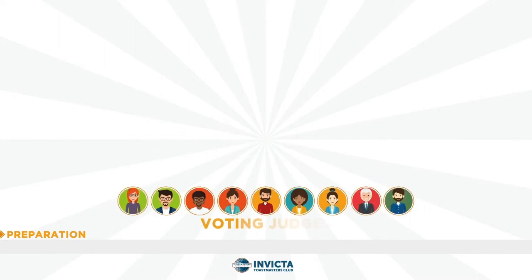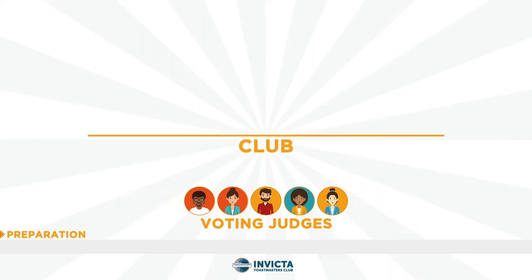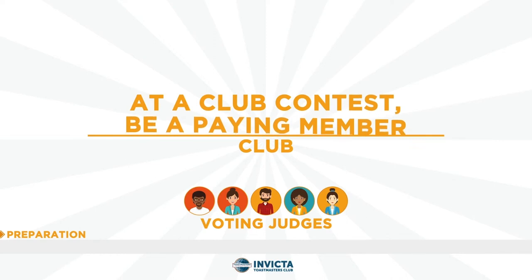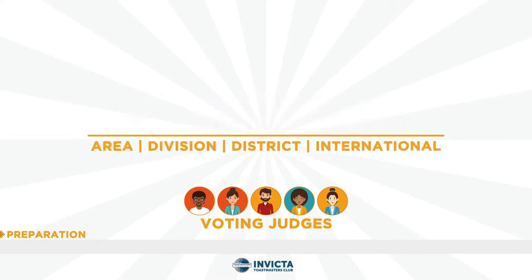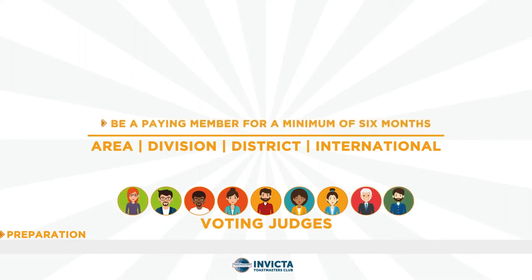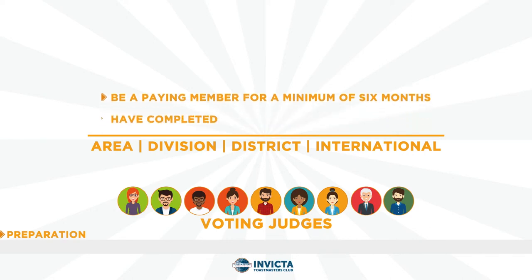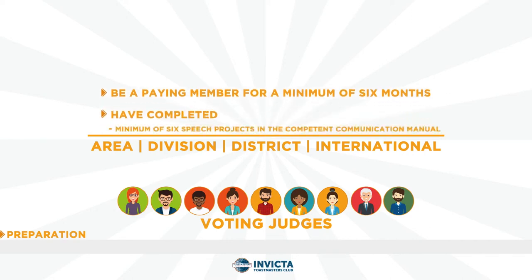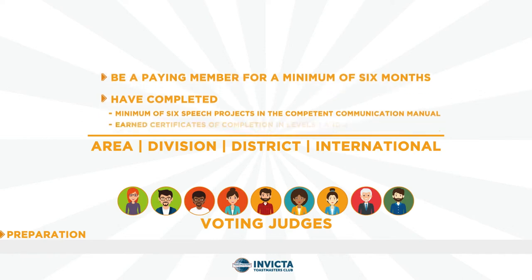To be a voting judge, tie-breaking judge, or chief judge at a Toastmasters speech contest, you must meet all the eligibility requirements identified below. At a club contest, be a paying member. At an area, division, or district contest, be a paying member for a minimum of six months, have completed a minimum of six speech projects in the Competent Communicator manual, or earn certificates of completion in levels one and two of any path in the Toastmasters Pathways learning experience.